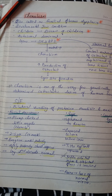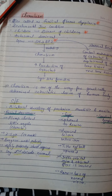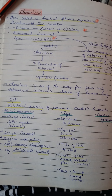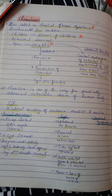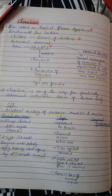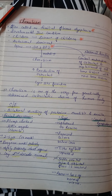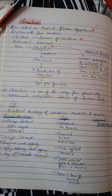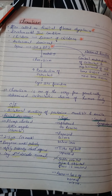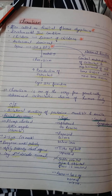The topic is cherubism. Its other name is familial fibrous dysplasia. It is a developmental jaw condition seen more commonly in children, which is why it is called the disease of children. It is an autosomal dominant condition.